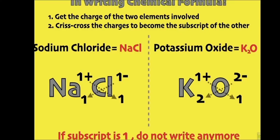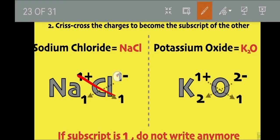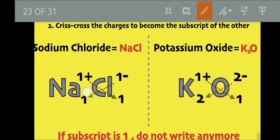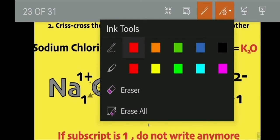For example, of our sodium chloride, sodium has 1 plus and then chloride has 1 negative. When we crisscross it, it became like this. So of course, you do not write when the charge is 1. You don't have to write that already. You just write it as NaCl.